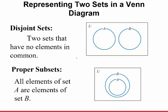Now let's talk about disjoint sets and proper subsets. In this Venn diagram, the universal set contains set A and set B, and notice how they are completely separate and don't overlap. Disjoint sets are two sets that have no elements in common. So set A might be numbers 1, 2, 3, 4, 5, and set B might be 6, 7, 8, 9, 10 — nothing in common.